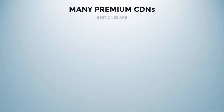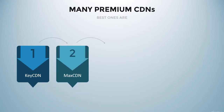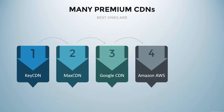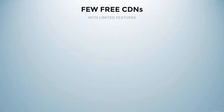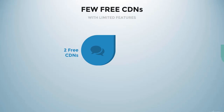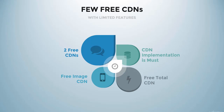There are many premium CDN services out there. The best ones include KeyCDN, MaxCDN, Google CDN, Amazon AWS, and Rackspace. But there are also a few free CDNs with limited features. We are going to use two free CDNs. Whether you follow PageSpeed Technique 1 or Technique 2, you need to implement CDN in your website — a free image CDN and a free CDN for the rest of your static files.